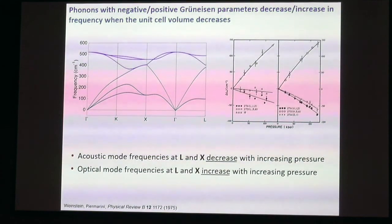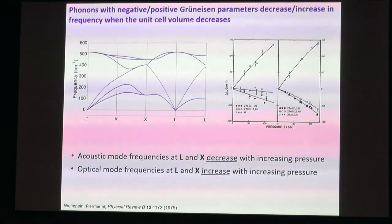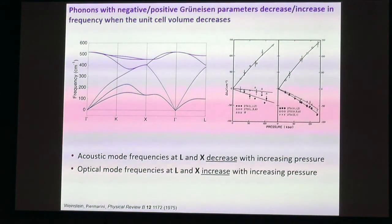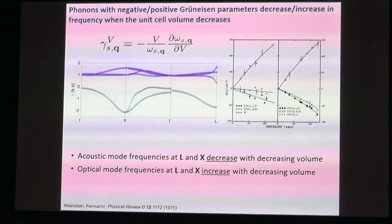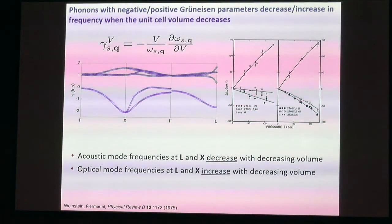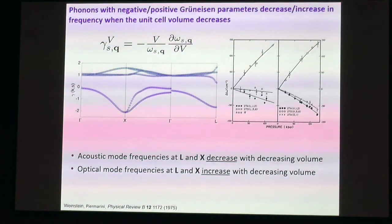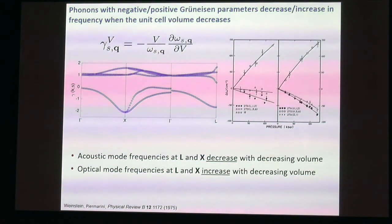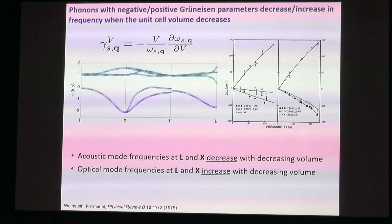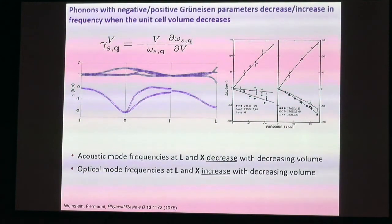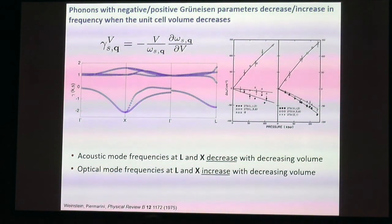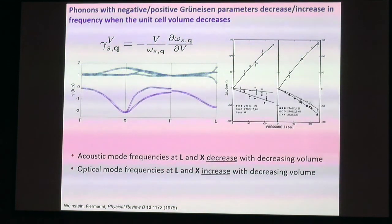This is the phonon dispersion curve of diamond-structured silicon from first principles calculations, along with experimental data showing how different sets of phonons at two different wave vectors change with pressure. The acoustic mode frequencies decrease with increasing pressure, while the optical mode frequencies increase with increasing pressure. This is a Gruneisen dispersion curve showing how mode Gruneisen parameters change as a function of wave vector. We can calculate these from first principles, usually with respect to volume rather than pressure—which is fine in a cubic material but not in a non-cubic material.